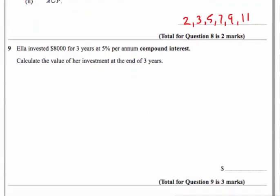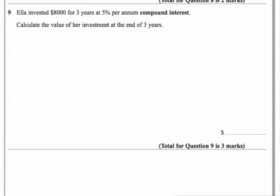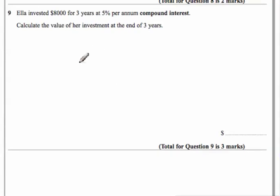Now then, Question 9 is a compound interest problem. Compound interest is very simple if you look at it, if we remember about our converting percentages into decimals. But let's make a start. So she's investing $8,000 for three years at 5% interest, and that's per annum. That means per year, every year.